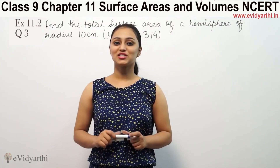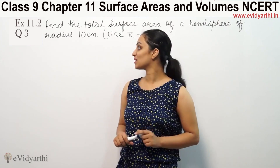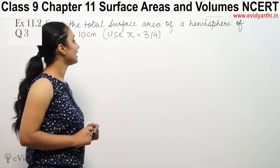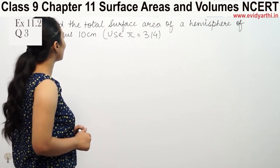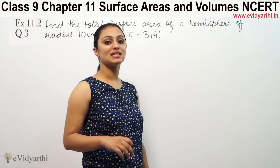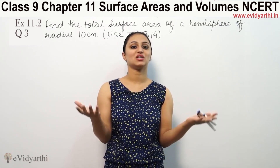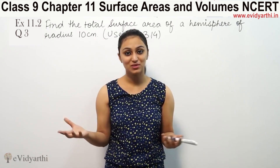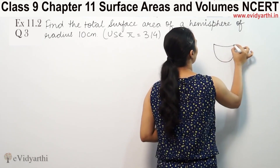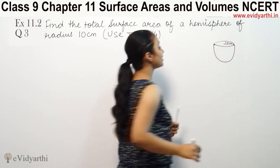Hi, this is Quishku with another question on surface area and volumes. This is question number 3 from exercise 30.4, page number 225. The task is to find the total surface area of a hemisphere of radius 10 cm. A hemisphere is what you get when a ball is cut in the center, giving 2 parts — each part is a hemisphere. The radius given is 10 cm.